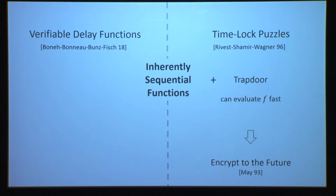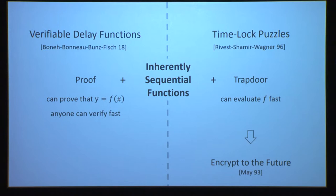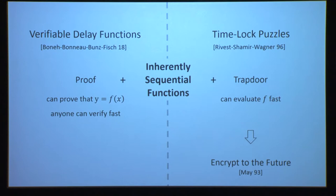Moving on to verifiable delay functions: these are inherently sequential functions where, together with the output, we can also compute a proof that this output is really correct — that y really equals f of x — and everyone should be able to verify this proof fast, much faster than t. So verifying this proof does not require you to reevaluate the function. These also have a lot of exciting applications, for example the powerful notion of randomness beacons, more research-efficient blockchain protocols, and many more.